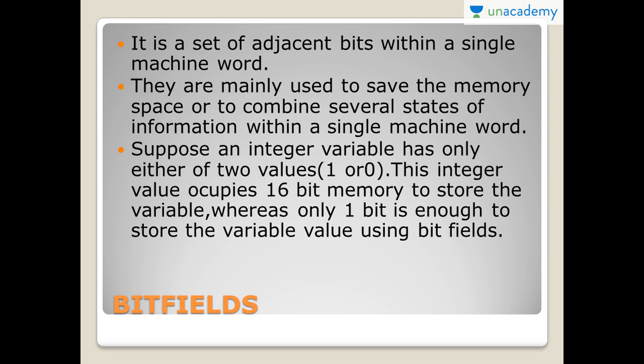Before going to the differences, let me cover Bitfields. Bitfields are nothing but a set of adjacent bits within a single machine word. They are mainly used to save memory space or to combine several states of information within a single machine word. Suppose we have an integer variable which has only one or two values — that integer variable occupies 16 bits of memory, whereas only one bit is enough to store the variable value using Bitfields.